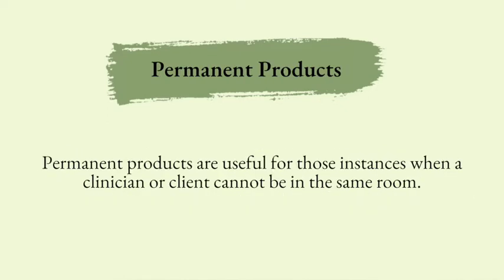Permanent products are great to use when the clinician cannot be with the client. For example, if a teenager is working on completing household chores for reinforcers, the clinician is not going to be living with the client all the time. So you rely on seeing the clean dishes the following day or the next session — when you come into the home and see the clean dishes, that's your permanent product. So in this video we discussed indirect measures, direct measures, and product measures of behavior. I wish you all the best luck as you're studying, and keep an eye out for the next set of our blogs.